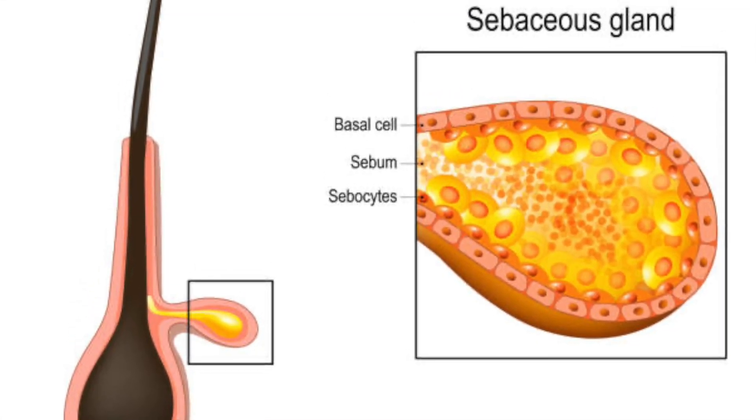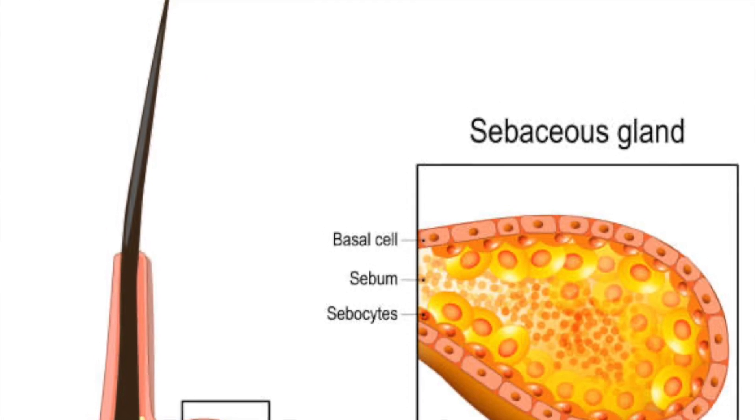You will hear the term follicular unit very commonly if you are considering hair transplantation, so this is just something to keep in mind. Now, the hair follicle has an important connection with the sebaceous gland, which means it is going to produce sebum. This is the body's natural way of moisturizing and taking care of the hair. This sebum mixes with sweat to form a protective layer on the scalp, and when we actually comb our hair we are distributing the sebum throughout the length of the hair shaft — moisturizing and keeping the cuticle intact.